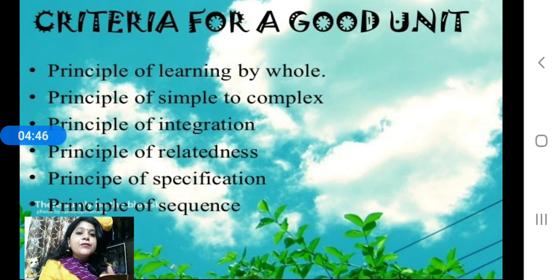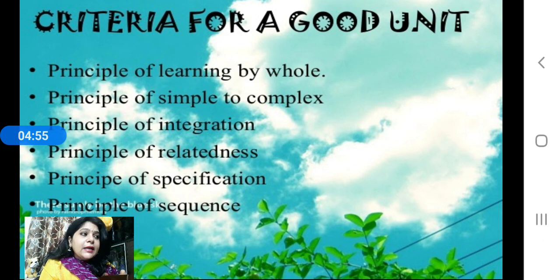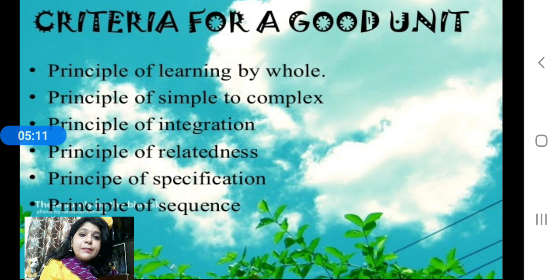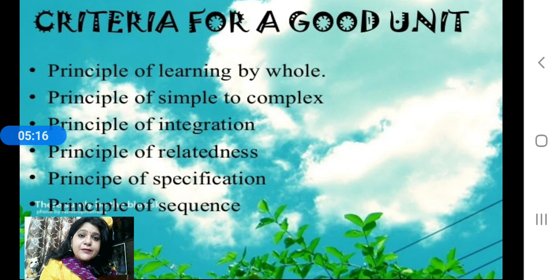The second is the principle of simple to complex. The hierarchy or order should be from simple to complex. For example, in a language unit on grammar — parts of speech — you have to start from noun, then pronoun, then come adjective, verb, and adverb. That hierarchy of knowledge, understanding, comprehension, and knowledge gain should be maintained in the unit, always from simple to complex.